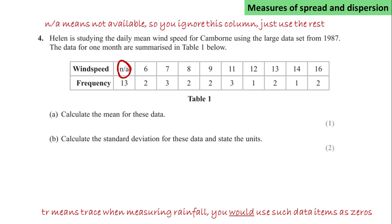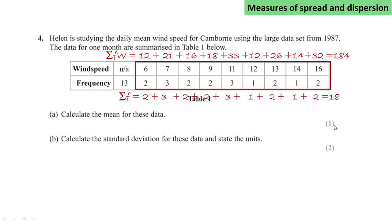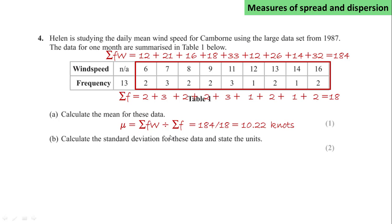We're asked to calculate the mean. We add up the frequencies and see that we have data for 18 days of the month. We then calculate σFW: 2×6 is 12, 3×7 is 21, and so on, giving a total of 184 over the 18 days. The mean therefore is σFW divided by σF, giving us 10.22 knots.